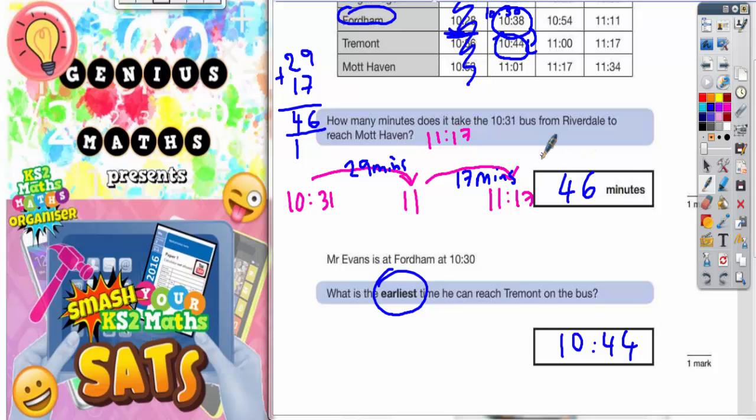46 minutes from Riverdale to Mott Haven on the 10:31 bus. And the earliest time he can reach Tremont is if he gets on bus number 2 at 10:38, and he will get there at 10:44.